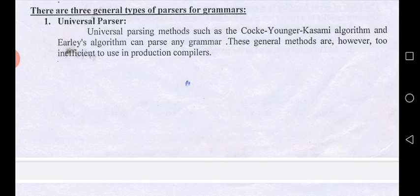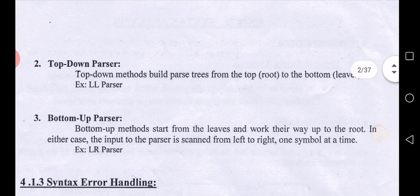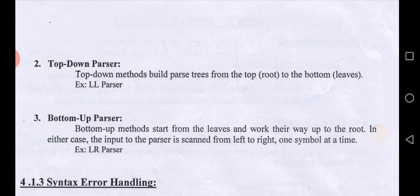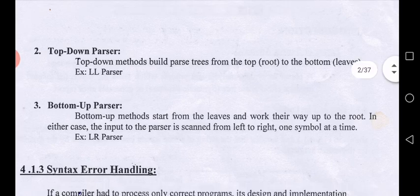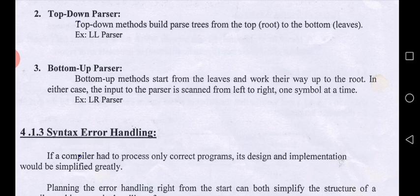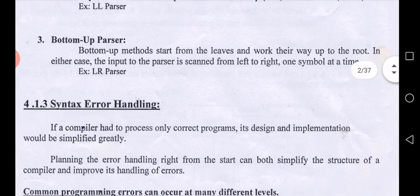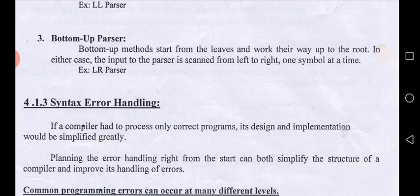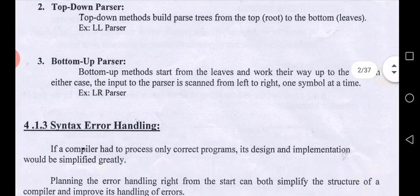We use the other two parsers: top-down and bottom-up. The top-down method builds the parse tree from the top — that is, from the root down to the leaves. An example of a top-down parser is the LL parser. The bottom-up method starts from the leaves and works its way up to the root. An example of a bottom-up parser is the LR parser. In both cases, the input to the parser is scanned from left to right, one symbol at a time.